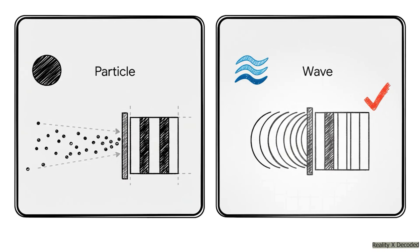And what did Young see? It wasn't two stripes. It was a full-blown interference pattern, a whole series of bright and dark bands. And that was it, the proof. Light behaves like a wave. It somehow spreads out, passes through both slits at the exact same time, and then interferes with itself on the other side.